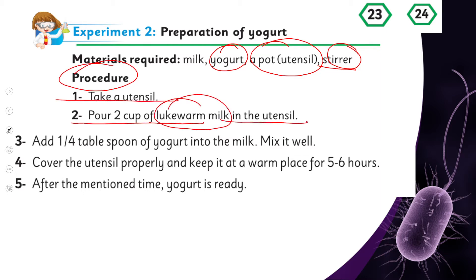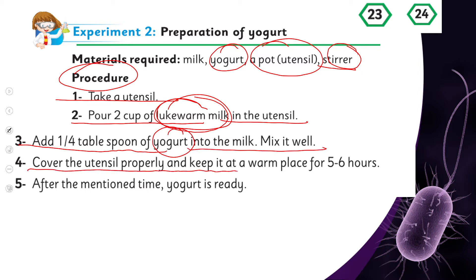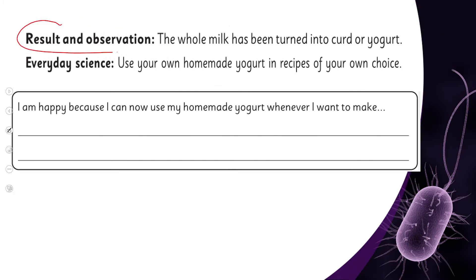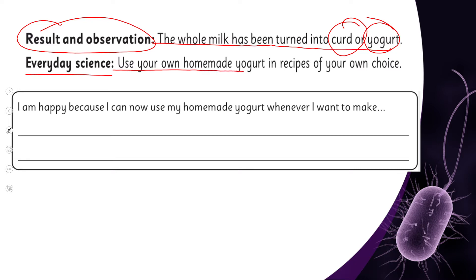The procedure: take a utensil, pour two cups of lukewarm milk into it — you can adjust the quantity — and add one fourth spoon of yogurt into the milk. Mix it well, cover the utensil properly, and keep it in a warm place for five to six hours. After that time, your yogurt is ready. The result: the whole milk has been turned into curd or yogurt. Everyday science — use your own homemade yogurt in recipes of your choice.